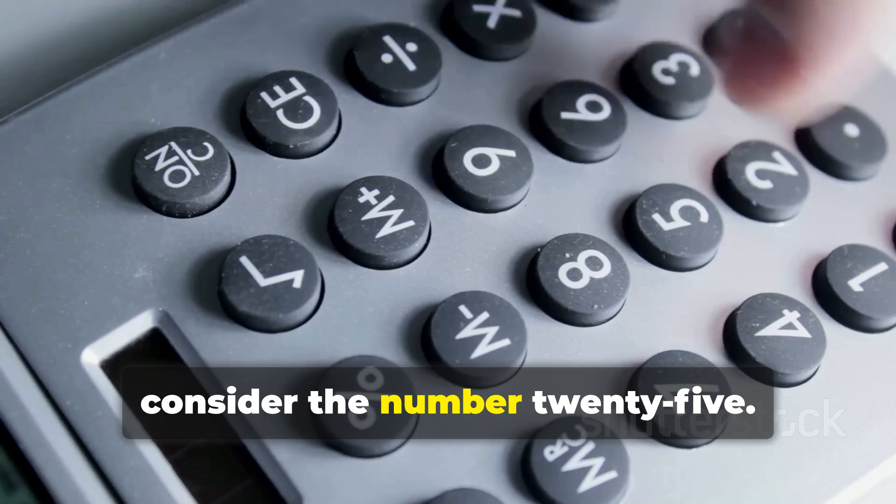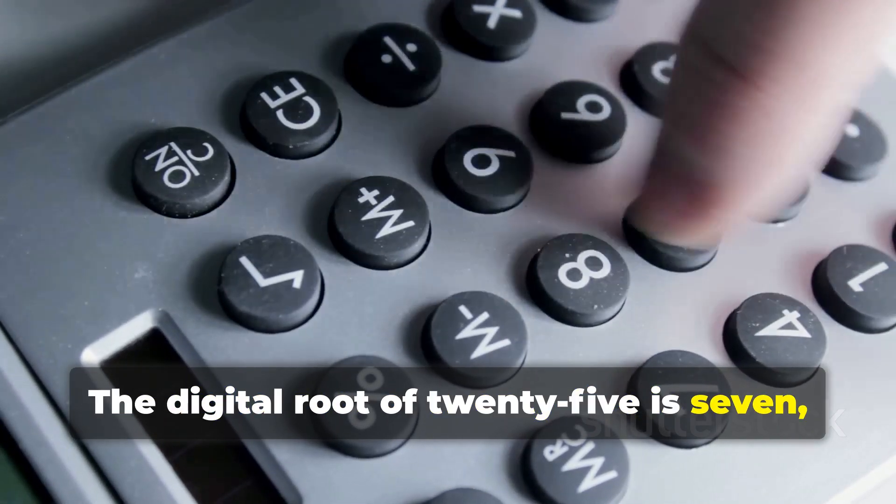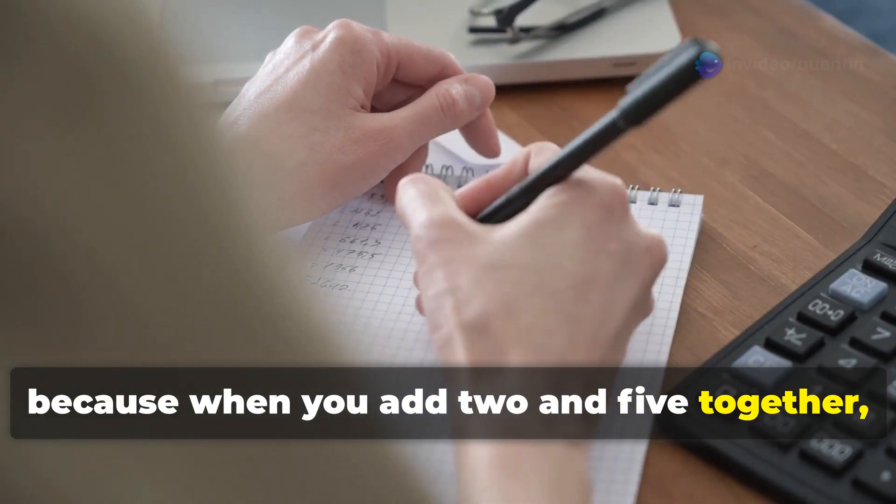For instance, consider the number 25. The digital root of 25 is 7, because when you add 2 and 5 together, you get 7.